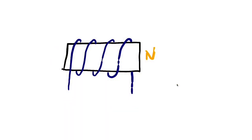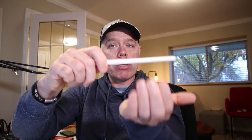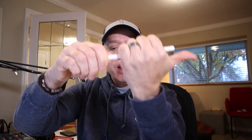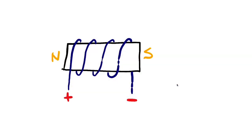Now let's flip it. If I swap so this end is negative and this end is positive, the coil now wraps underneath, because we always follow the negative as our reference with electron current flow. When it wraps underneath, it's like I'm looking at the palm of my hand. That tells me my north pole is now in the opposite direction, and my south pole is on the other side.